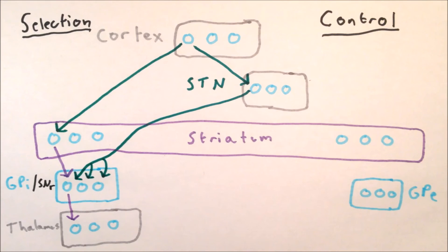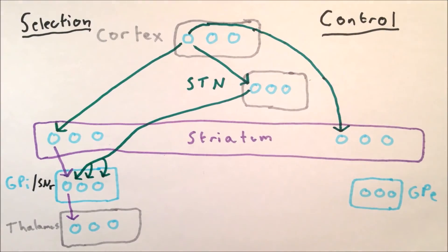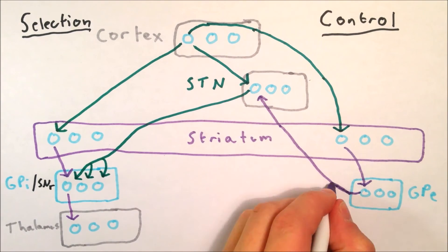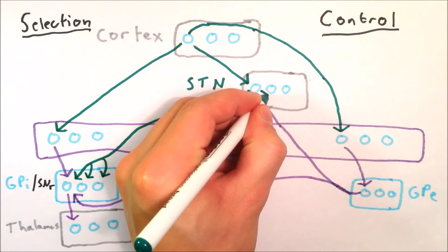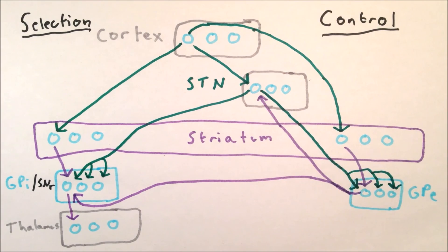In the control pathway, the cortex again excites the striatum. The striatum then inhibits the globus pallidus externa, and the globus pallidus externa in turn inhibits the subthalamic nucleus and the substantia nigra pars reticularis. However, the globus pallidus externa also receives diffuse excitation from the subthalamic nucleus.